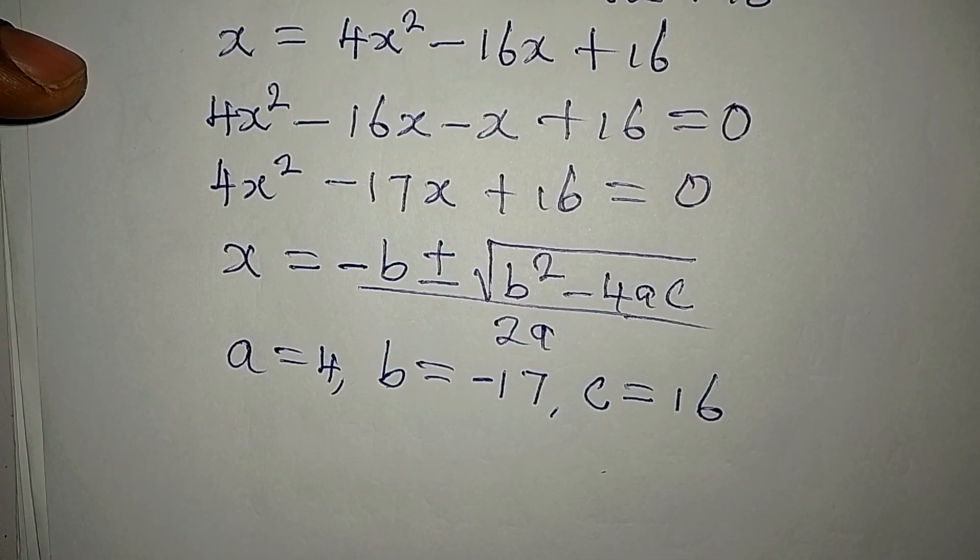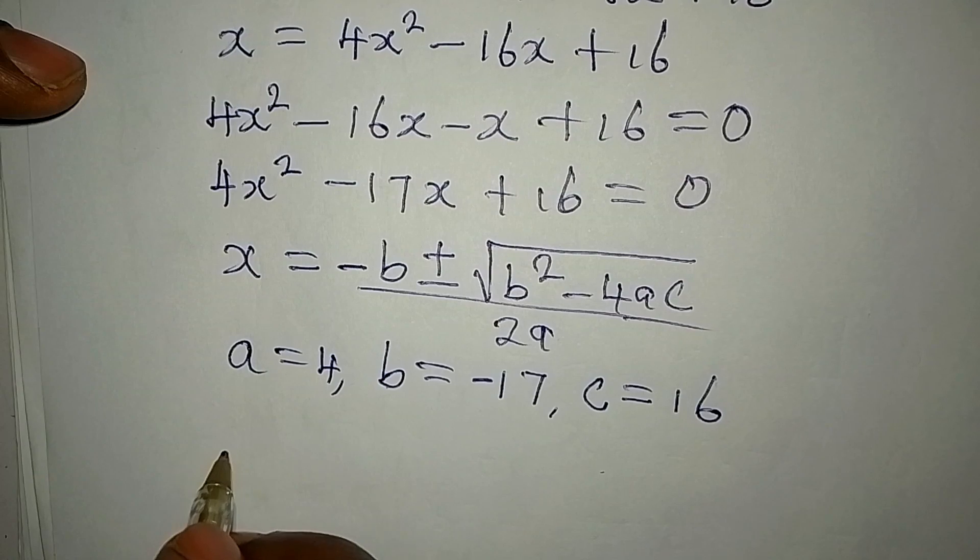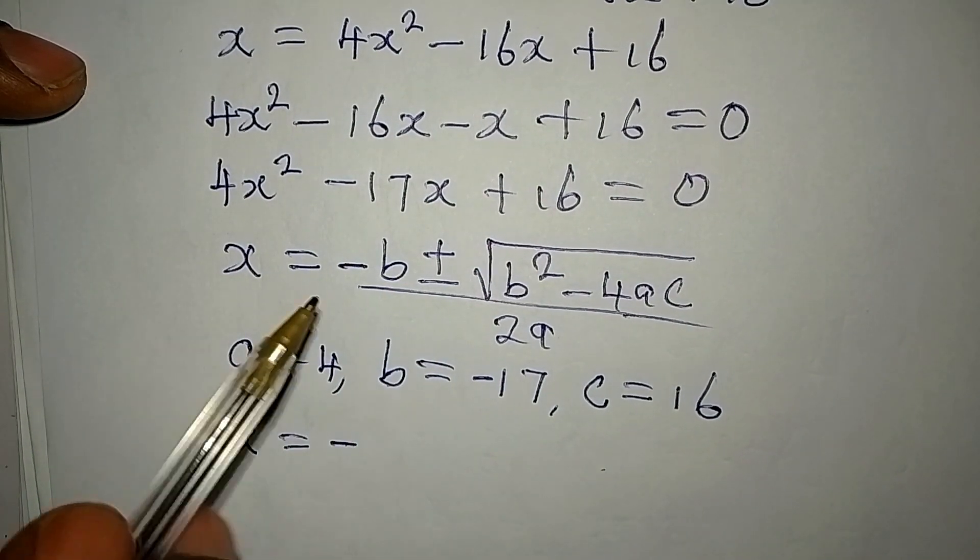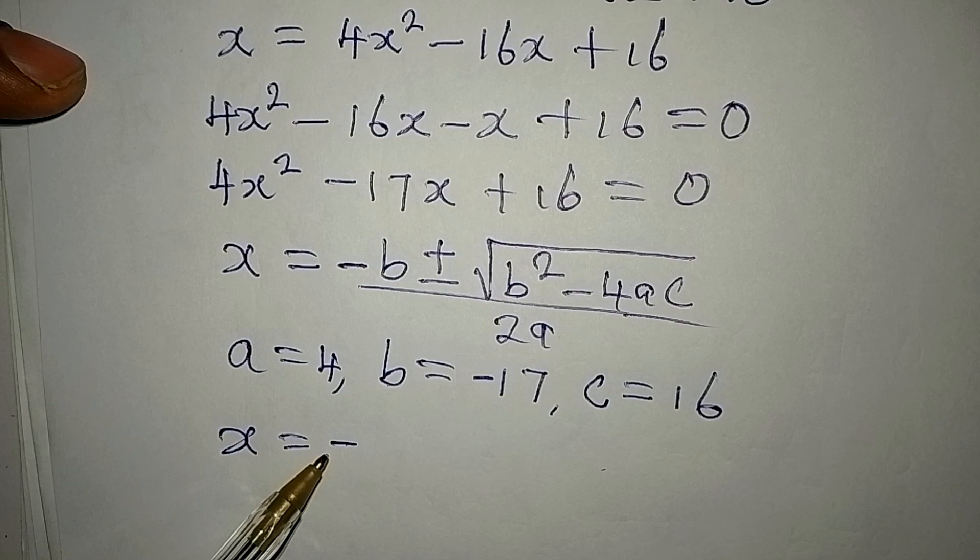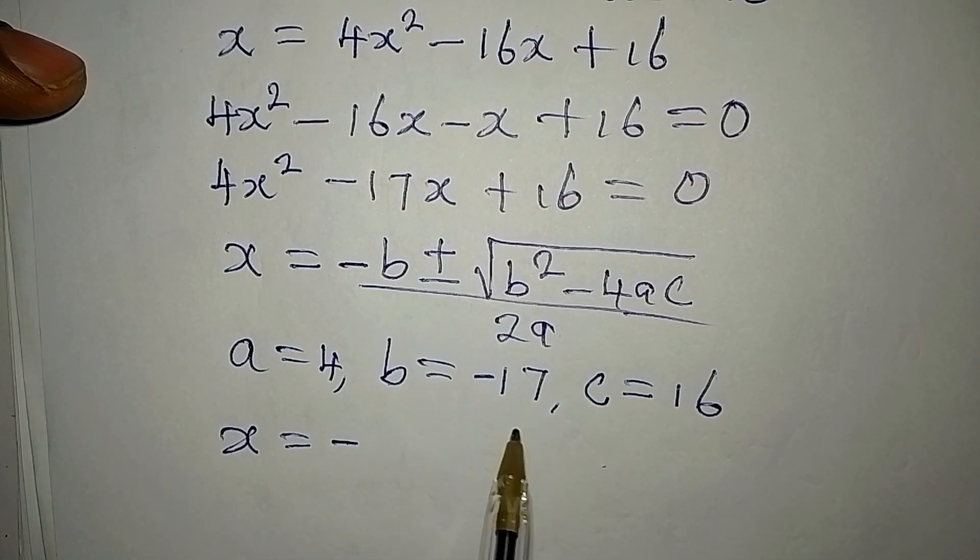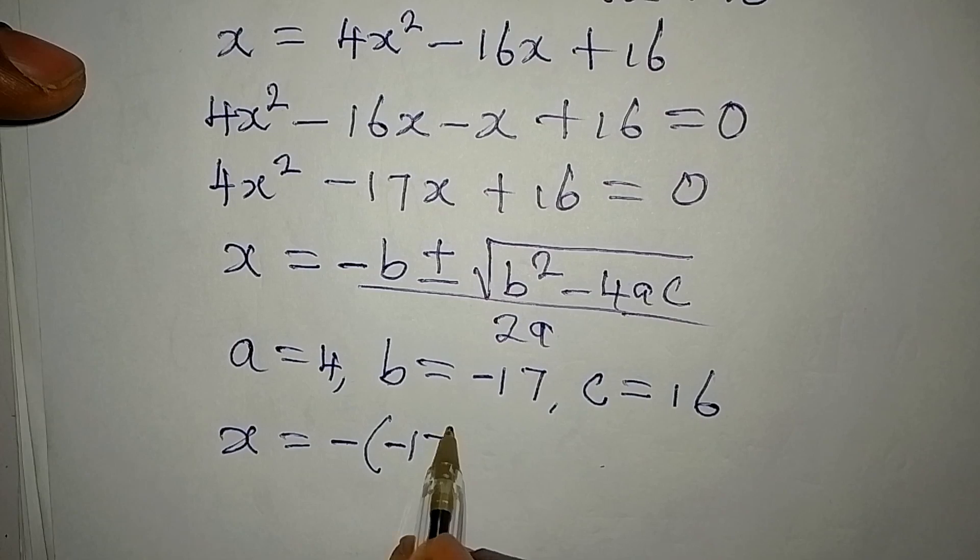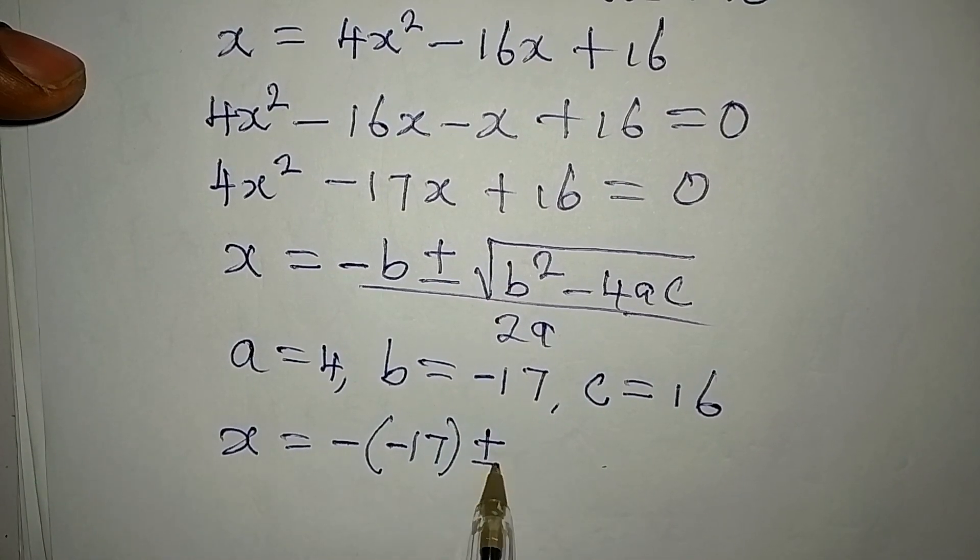Now, put them straight into the formula. So, our x will now be... In place of minus b, this negative will appear first. Then b itself is minus 17. So, that means I'll have brackets, and I'll have negative 17. Plus or minus...